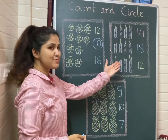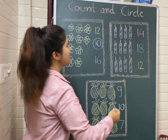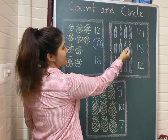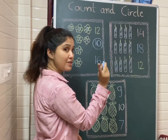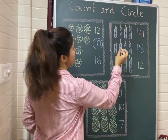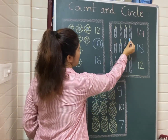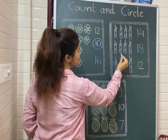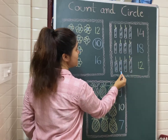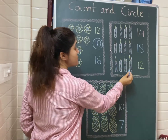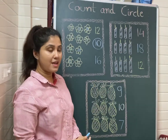Now let's move on to the next question. Here you can see candles. Let's count the candles. 1, 2, 3, 4, 5, 6, 7, 8, 9, 10, 11, 12. 12 candles are here.